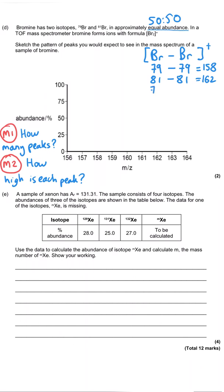Or we could have one of each. The one on the left could be 79, and the one on the right could be 81. Or the one on the left could be 81, and the one on the right, 79. And so, these two combine to give a total of 160 for both of them. So what that means is, we've got four possible combinations, but two of them end up with the same mass, 160.